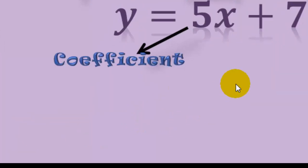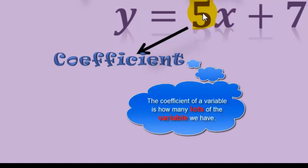The first thing I want to look at is this part here, the 5 in front of the x. This is known as the coefficient of x. So if you want to know what the coefficient of x is, it's how many lots of x we've got. And it's 5.